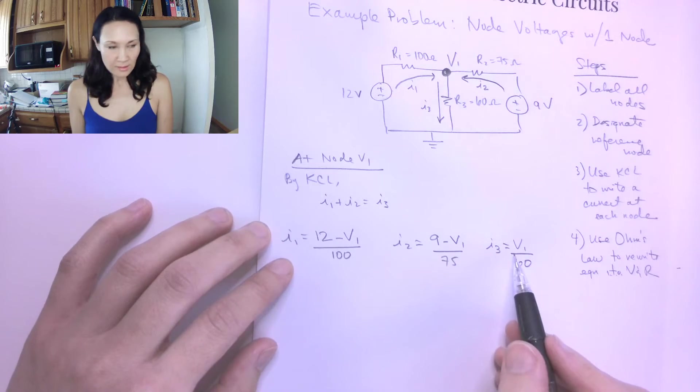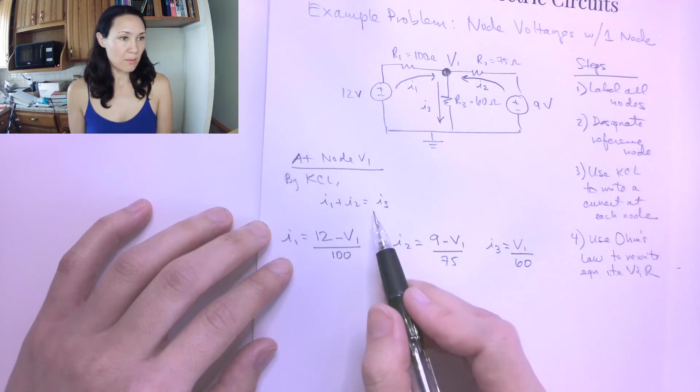Now, I make this substitution for all these currents into my KCL equation.